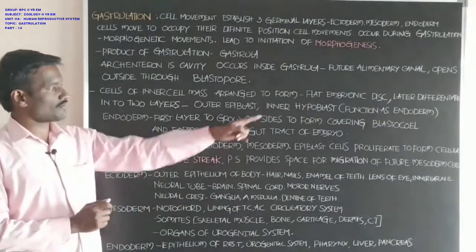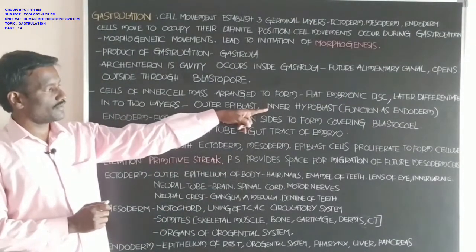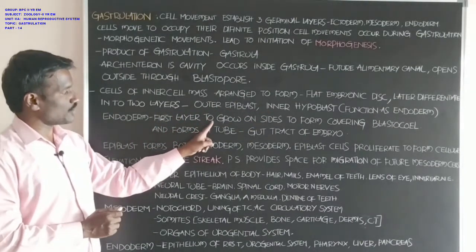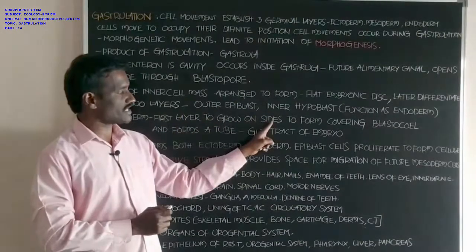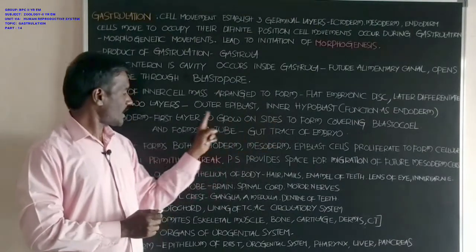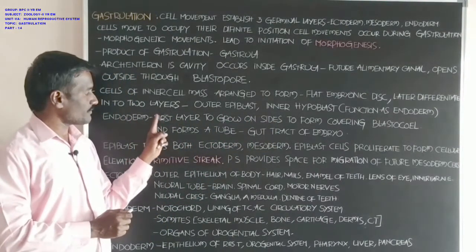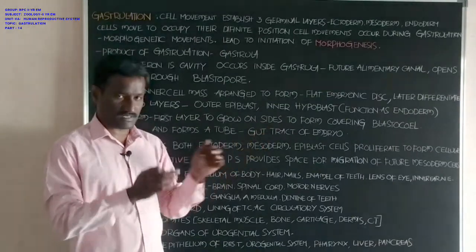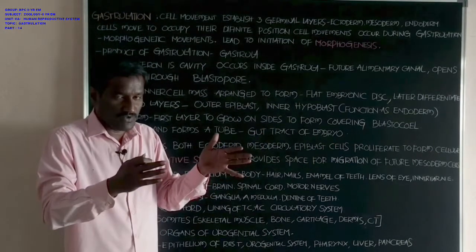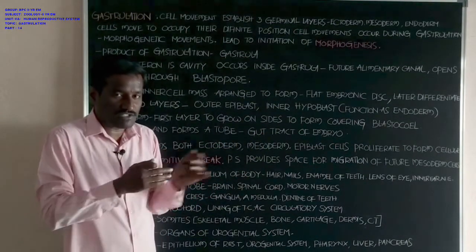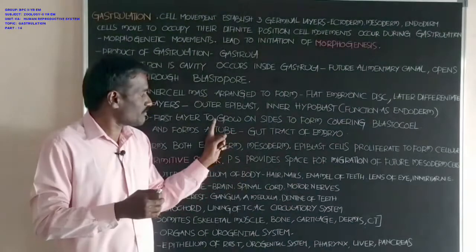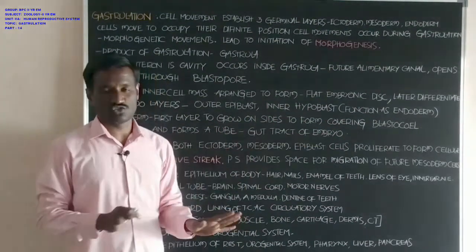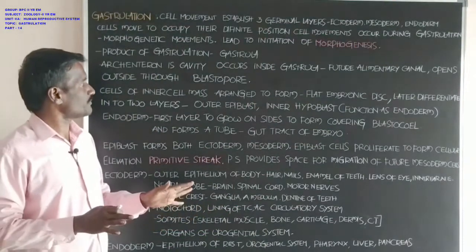Endoderm is the first layer to grow on sides, which is possible by division of cells. It grows on sides to form a covering over the blastocoel. The entire blastocoel is covered with the endoderm and forms a tube-like structure.